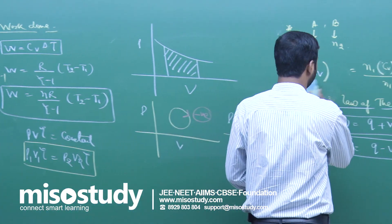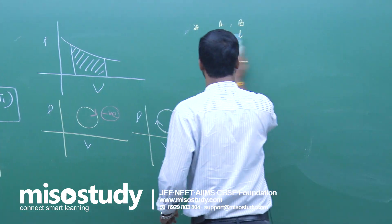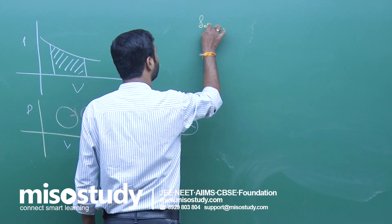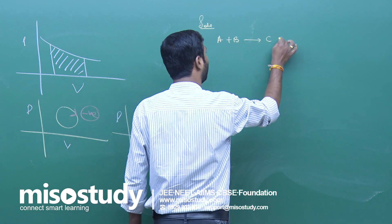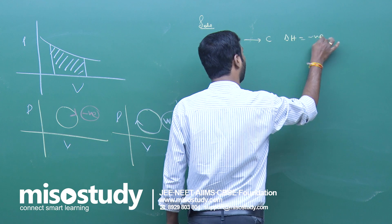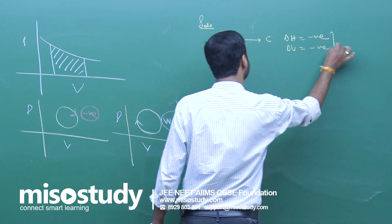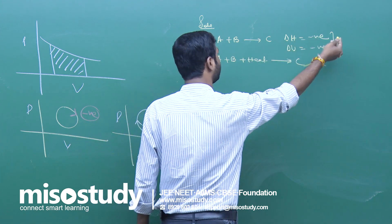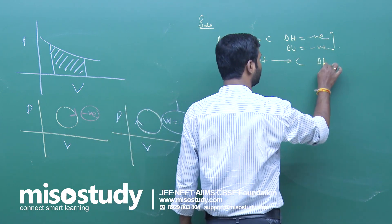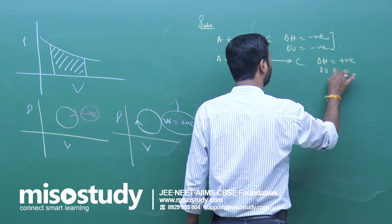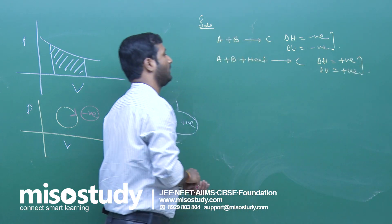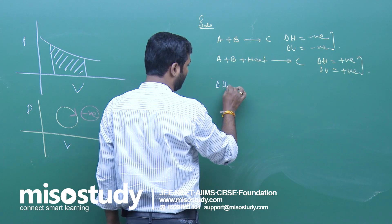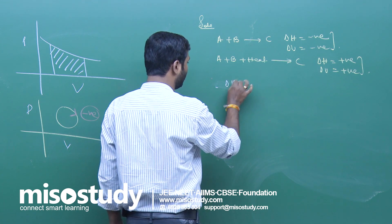Next is thermochemistry, which deals with the heat change during a reaction. If delta H or delta U is negative, the process is exothermic — heat is released. If delta H or delta U is positive, the process is endothermic — heat is absorbed by the system.